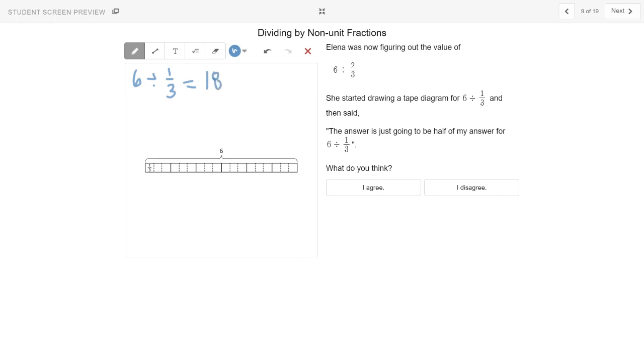So if I did Elena's way, the answer is going to be half of my answer for six divided by one-third. So Elena's way would give me six divided by two-thirds should be half of that, should be nine.